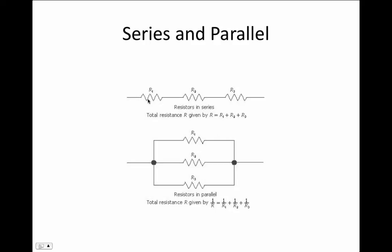Series and parallel circuits: you can hook resistors up in two ways. In a series connection, they're hooked up in a line — front of one to the back of the next. In a parallel circuit, one side of all the resistors is connected together and the other side is all connected together. This also applies to batteries. For example, if you have six-volt batteries and need 12 volts, you hook them up in series.